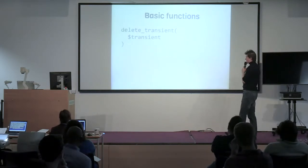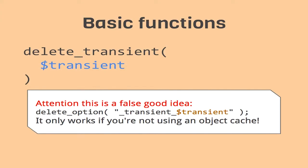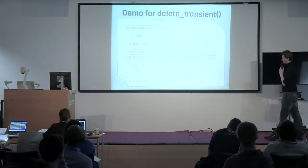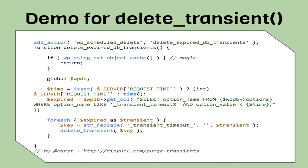Sometimes you have to delete your transients yourself using delete_transient with only one parameter - the name. And delete_option is the same false good idea, because delete_option won't work if you're using object cache or memcache, because options are not transients. There's a little script to delete your expired transients in your database. The magic line is: if WordPress is using an external object cache, return - it won't work. But if you're not using object cache, it will request all your transients with an expired time and clean your database.